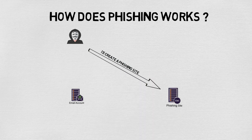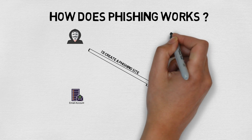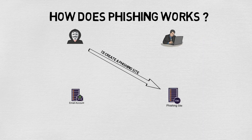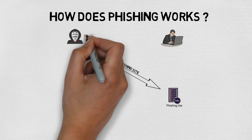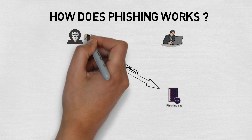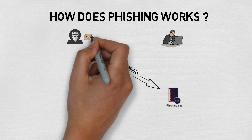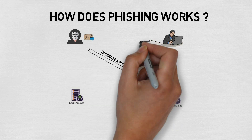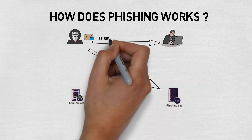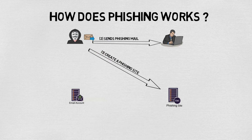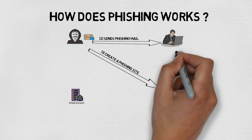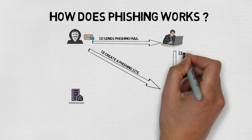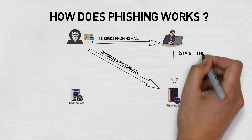Once the website is uploaded, the attacker will find the target users. The attacker creates a phishing email saying, 'Congratulations, you have won the jackpot — please enter your details in the given website.' The link of the website is given below. The attacker sends the email to the target user, who falls into the phishing trap, opens the phishing mail, visits the phishing page, and enters their details.